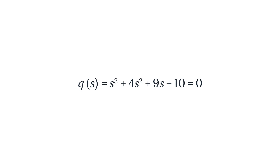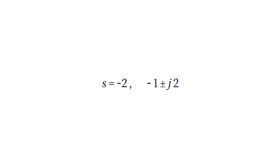Let's do two examples — one of a stable and one of an unstable system. Let's look at the characteristic equation s³ + 4s² + 9s + 10 = 0. Using your algebra skills or a calculator, you can find that the roots are at s = -2 and s = -1 ± j2. Since all the poles are in the left half of the s-plane, we can assume that the system is stable. However, we'll verify this result with the Routh-Hurwitz criterion.